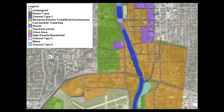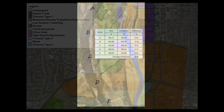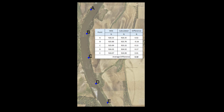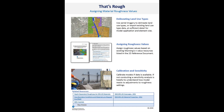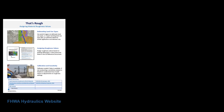Determining appropriate land use types and associated roughness values is an important step in developing 2D models. Because this process requires user judgment, it is best practice to calibrate or assess model sensitivity to assigned parameters. A one-page summary sheet outlining key steps of delineating and assigning roughness values for 2D models and additional resources is available at this link.